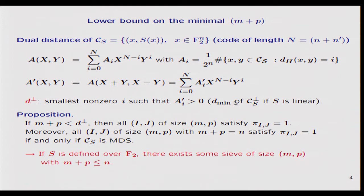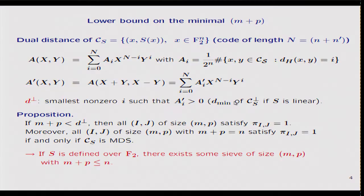We consider the code composed of all words (x, S(x)). Usually this is a non-linear code because S is an S-box, but we can compute its distance enumerator — a bivariate polynomial where the coefficient A_i is exactly the number of pairs of codewords at distance i within the code. The very nice thing about this expression, named McWilliams' identity, is that if we replace X by X+Y and Y by X-1 and expand the polynomial, we get another distance distribution.